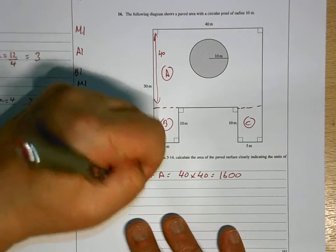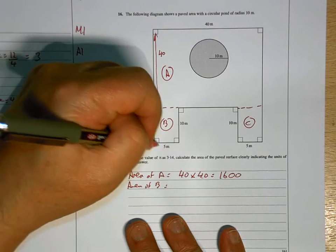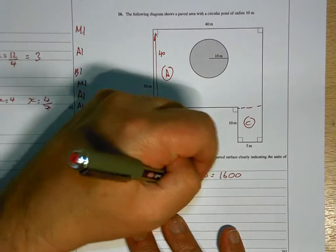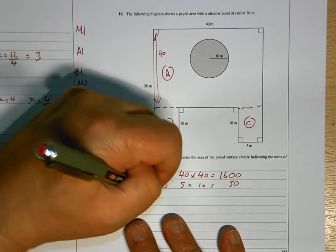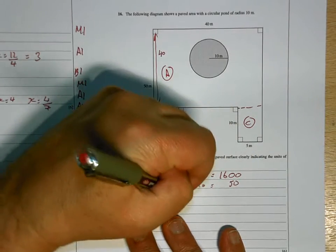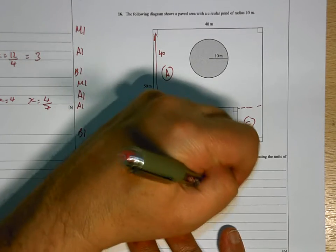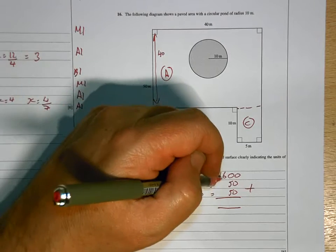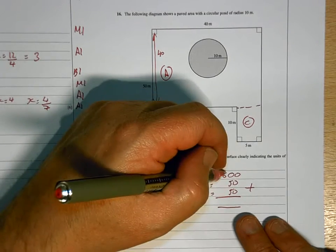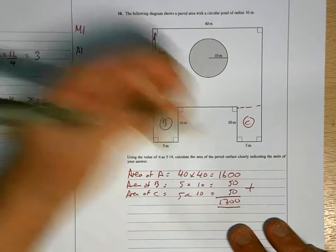Area of b will be 5 times 10, which will be 50. And the area of c will be 5 times 10 which will be 50. So, the total area is going to be 1600 plus another 100 is 1700.